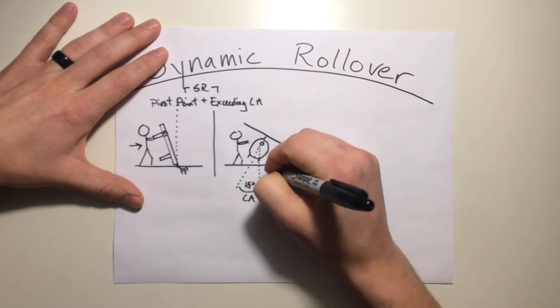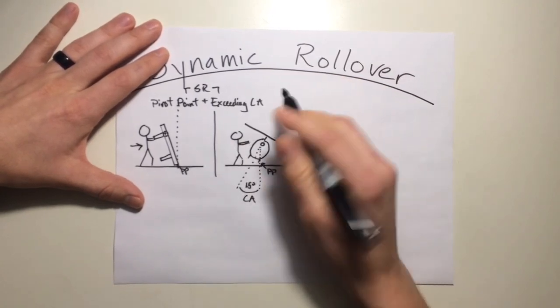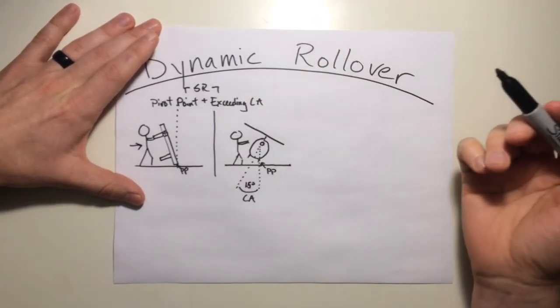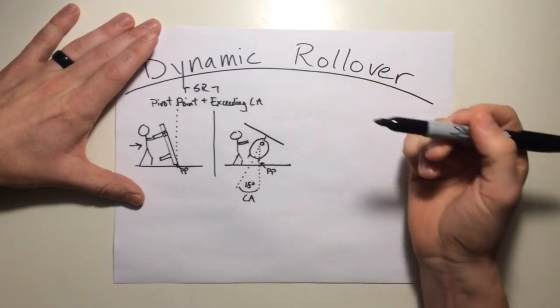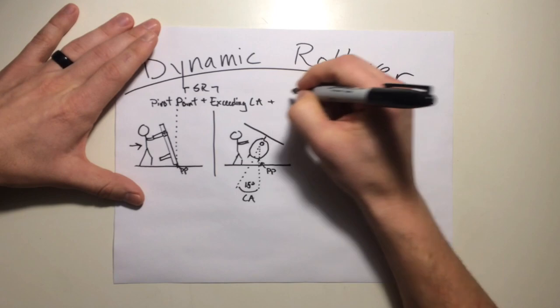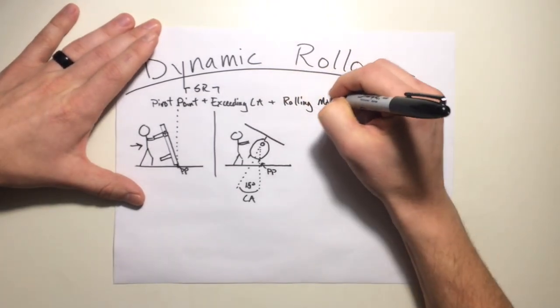Alright, once again, it's got that pivot point. Let's say this main landing gear and it's exceeded the critical angle. It continues to fall over in a static rollover condition. Now that is a static rollover condition. That means there's no motion in the object prior to. Now what makes this a dynamic rollover is we're going to add rolling motion to the object.